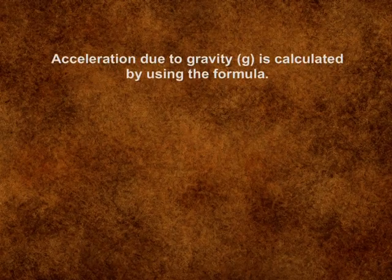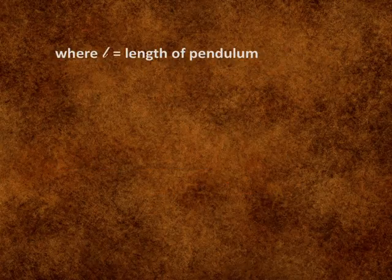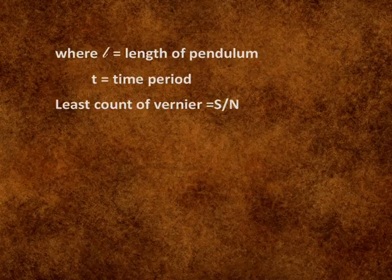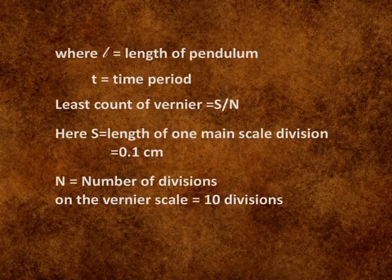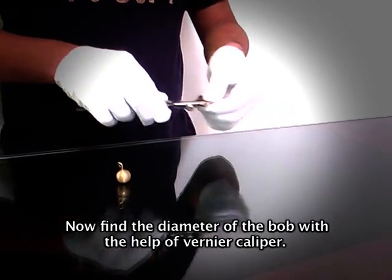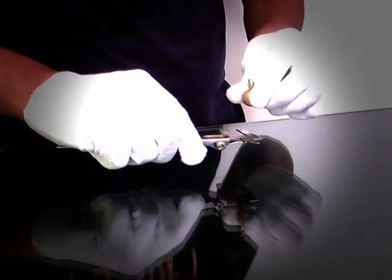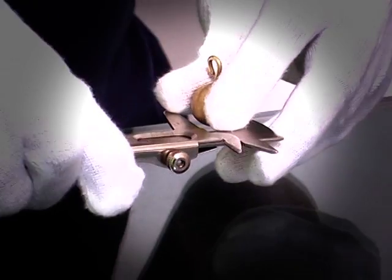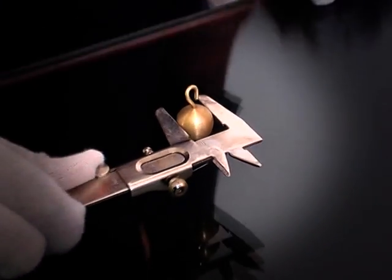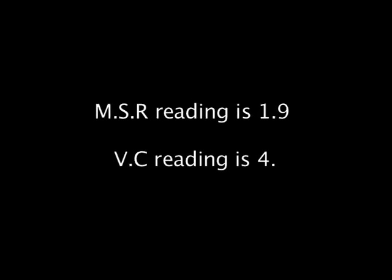Now find the diameter of the bob with the help of vernier caliper. MSR reading is 1.9 and VC reading is 4.